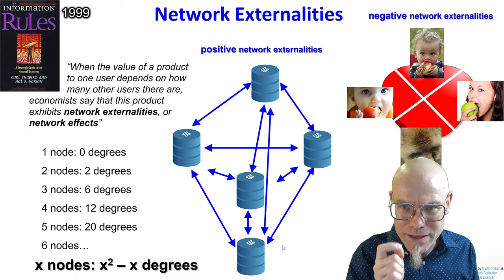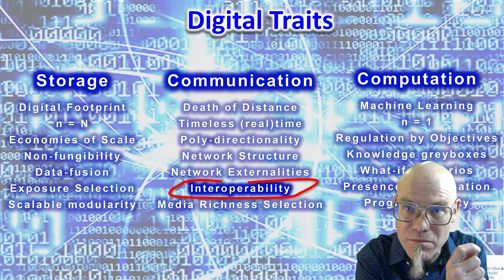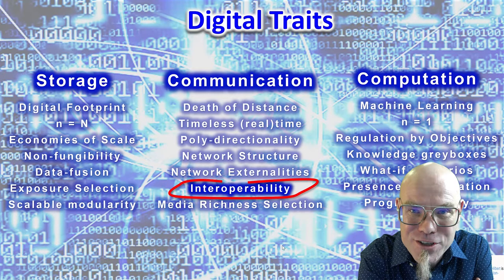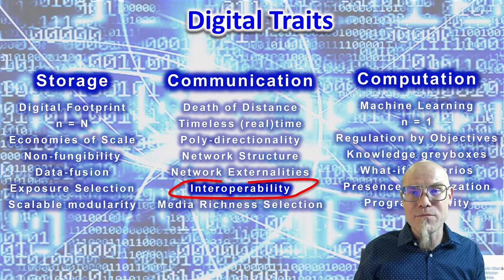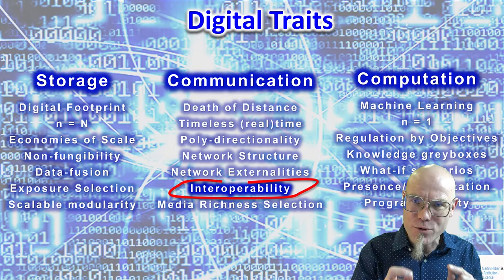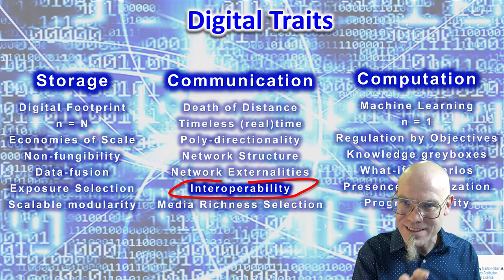That leads to the next important concept: interoperability. To take advantage of the powers of network externalities, you need to make sure that all different network members can talk to each other. If you're in a social network, hopefully you speak the same language; machines need to do the same. Interoperability is a very important subject because connecting different machines that don't necessarily speak the same language is a core challenge in building digital systems.